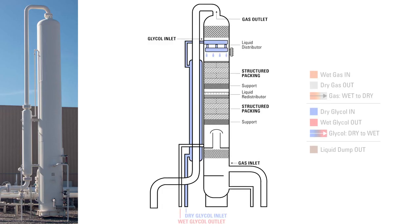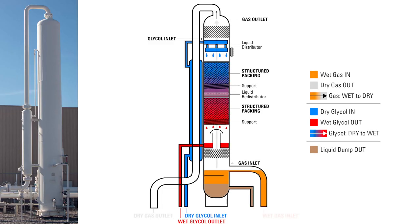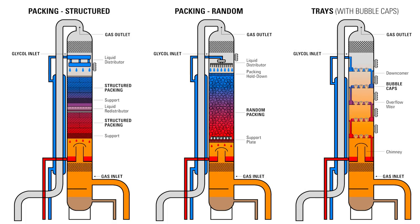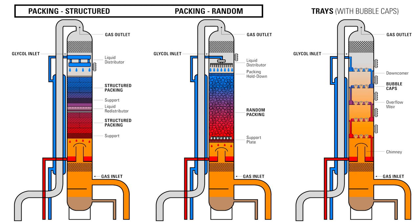In all three designs, the basic motion of the glycol and natural gas are similar. Glycol comes into the top of the tower and flows down, while natural gas comes in from the bottom and flows up. The glycol becomes saturated as it absorbs water vapor in the natural gas, making it dry. The major difference is how they come into contact with each other, either through packing or trays with bubble caps.